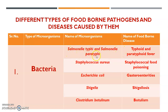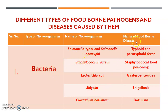Looking at the table of bacteria: Salmonella typhi and Salmonella paratyphi cause typhoid and paratyphoid fever. Staphylococcus aureus causes staphylococcal food poisoning. Escherichia coli causes gastroenteritis. Shigella causes the foodborne disease known as shigellosis. Clostridium botulinum causes the foodborne disease known as botulism. These are the different bacteria and the foodborne diseases they cause.